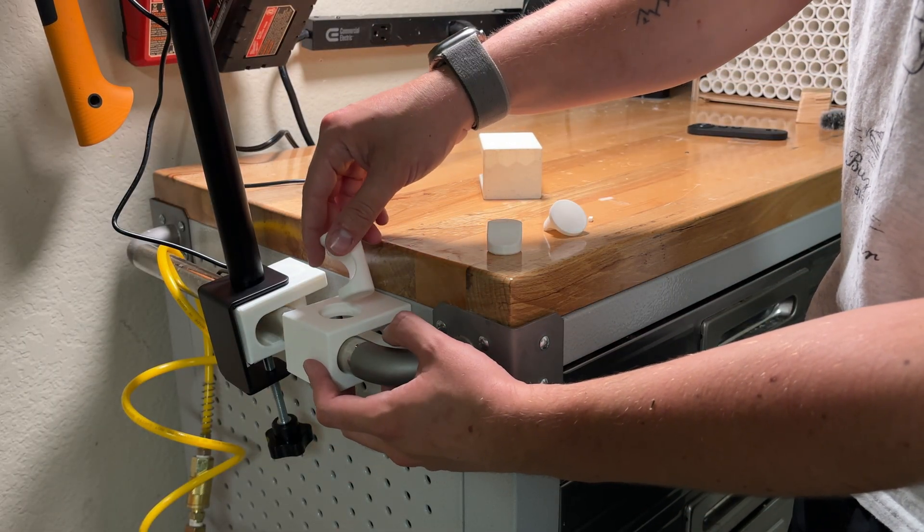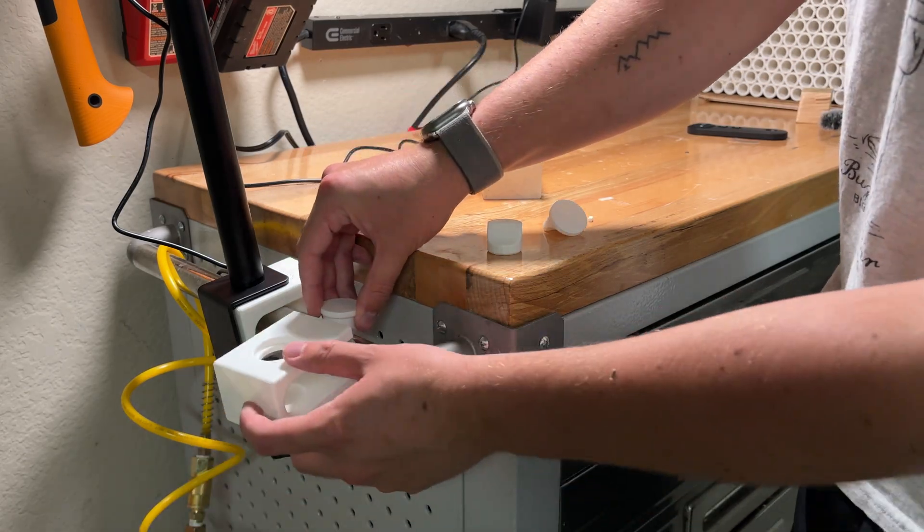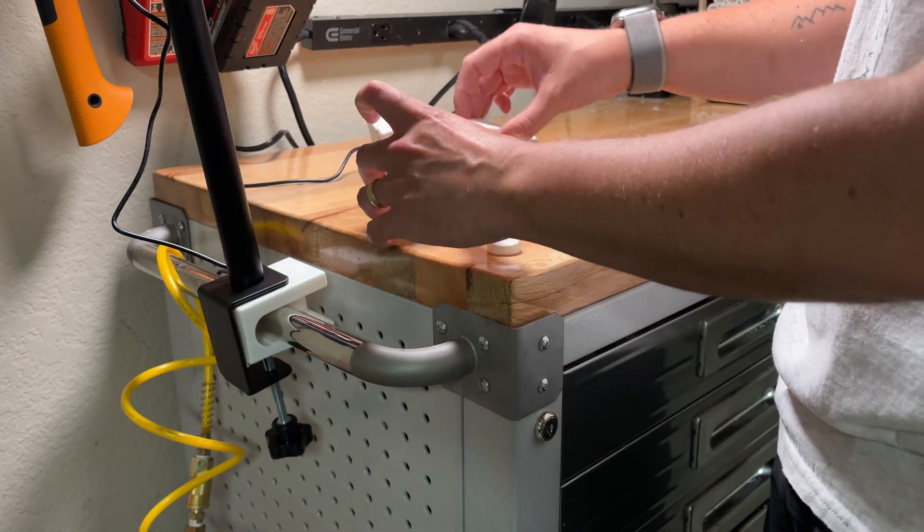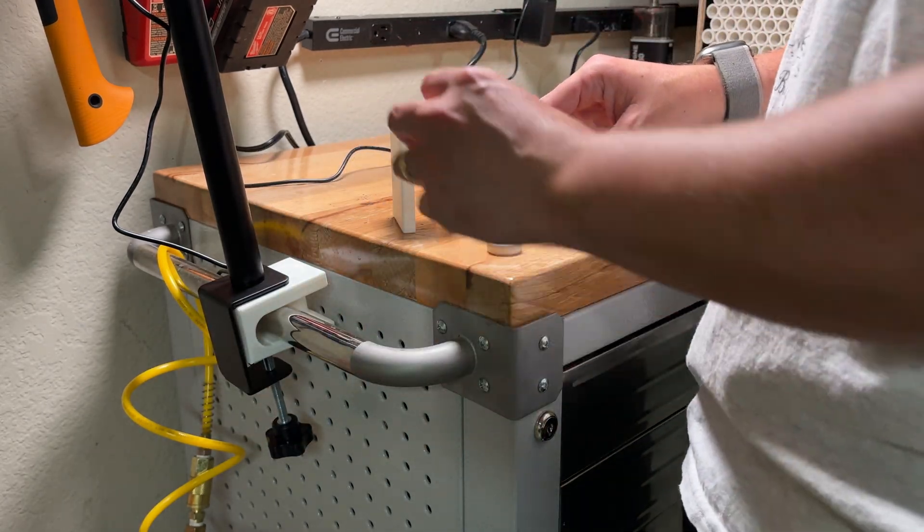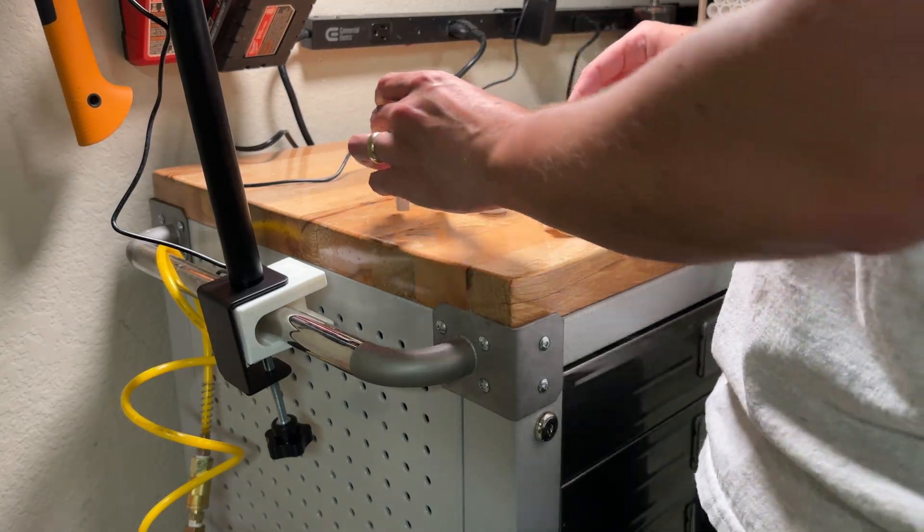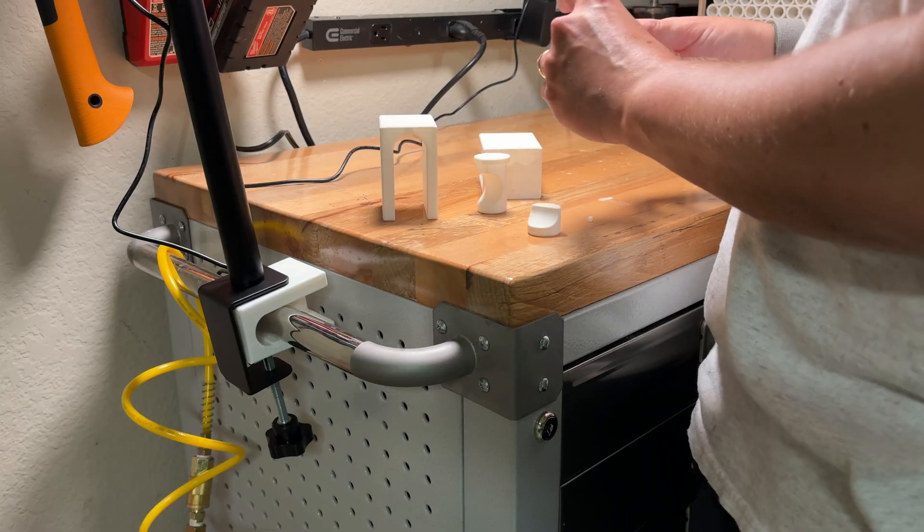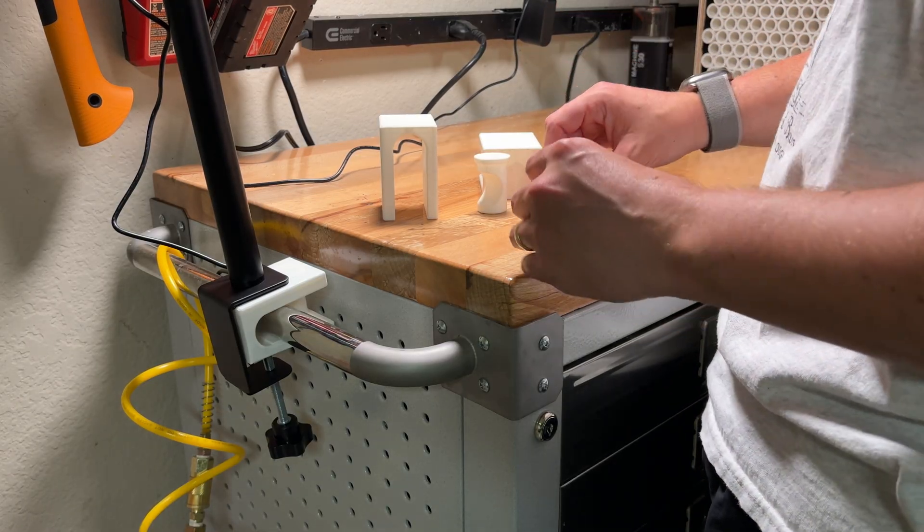Or even if it was the right height, there's no way that I could get it in there because of the square thing, circle thing, whatever that is. So in this next rendition, what I did is on the Creality slicer, you can basically cut it in half.